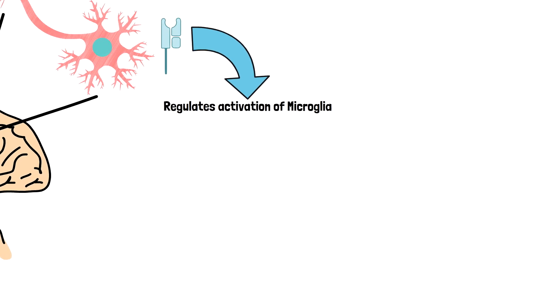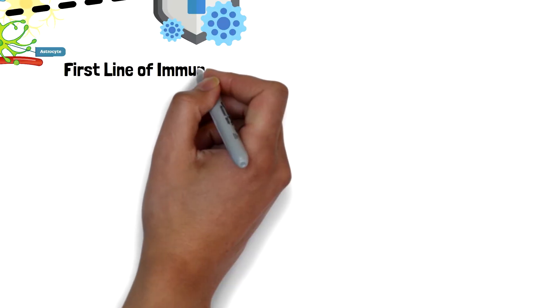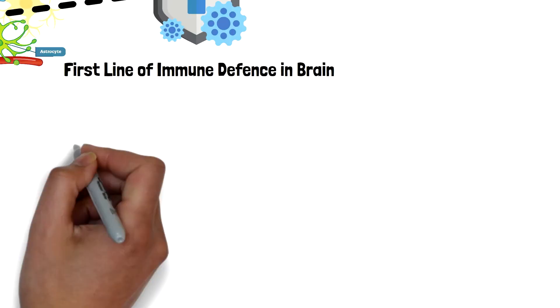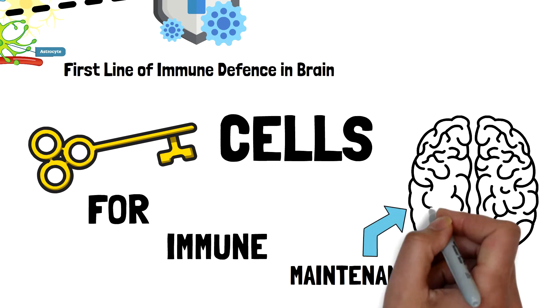Microglia are a type of neuroglia located throughout the brain and spinal cord. These cells act as the first line of immune defense in the central nervous system and are key cells in overall immune maintenance in the brain.